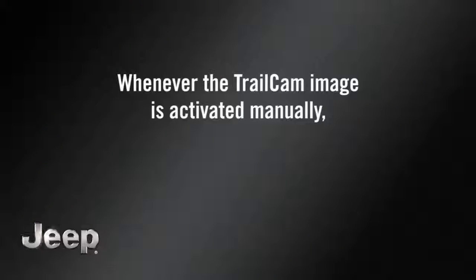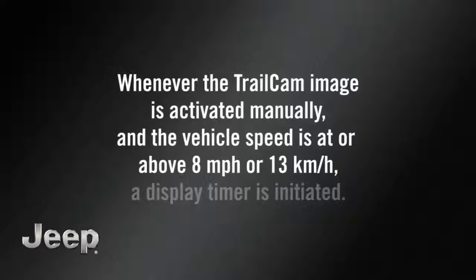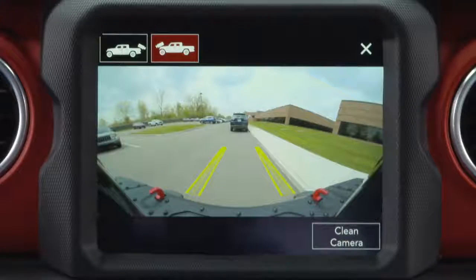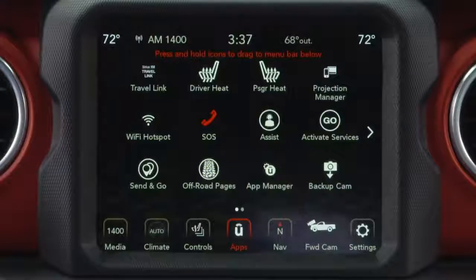Whenever the TrailCam image is activated manually and the vehicle's speed is at or above 8 miles per hour or 13 kilometers per hour, a display timer is initiated. The image will be displayed until the timer exceeds 10 seconds.